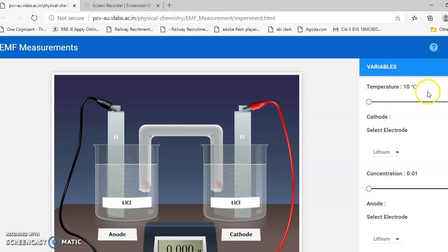First of all, let us fix the temperature. Usually the room temperature could be fixed as 25, 27, or 30 degrees Celsius. Then I'm going to choose a cathode. Here we have a list of cathodes like lithium, potassium, barium, calcium, sodium, magnesium, aluminum.